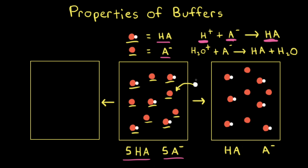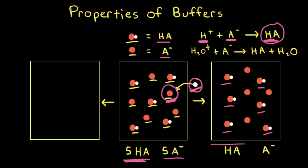For the particulate diagrams, this added H+ is going to react with one of the A-minuses present in the buffer solution. The H+ and the A- form an HA, so we're going to go from five HA's to six HA's. Looking at this next particulate diagram, we can see there are now six HA's in the solution. And since we started with five A-minuses and lost one, we should have only four A-minuses in solution now.